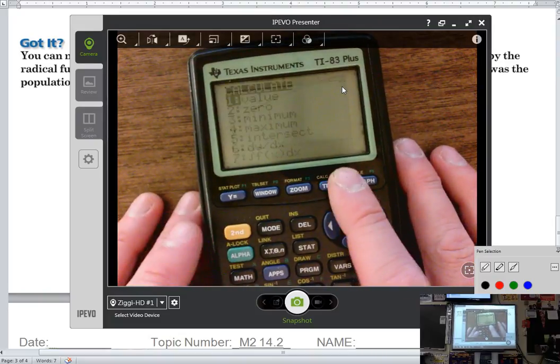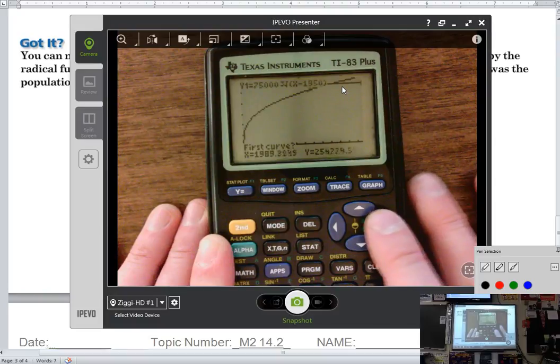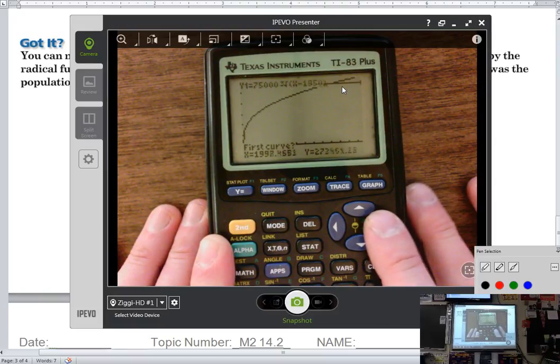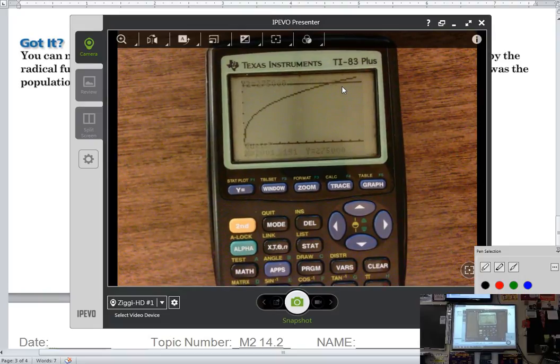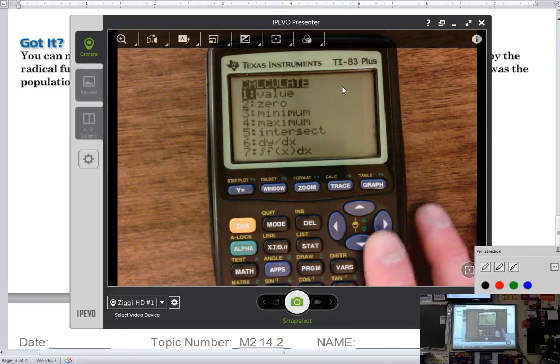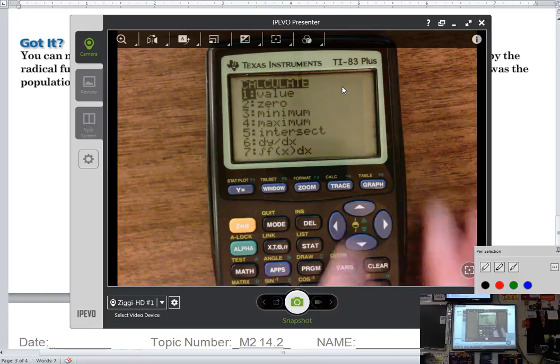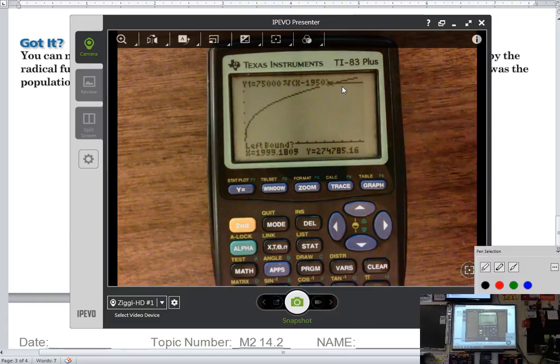So I do second calc, intersect. I literally set up a y equals of 275,000. Then they cross through each other so there is an intersection. The question is where is it, and that's when I use my function for intersect. It's your intersection point. So you second trace, do your intersection, and you get 1999.